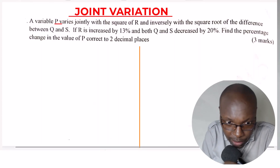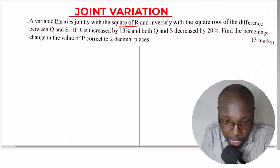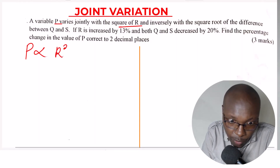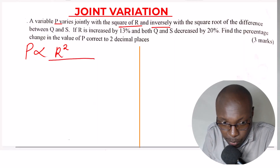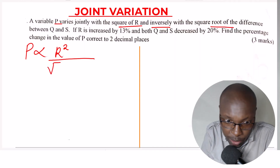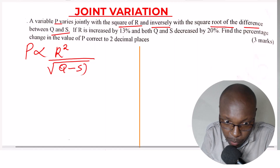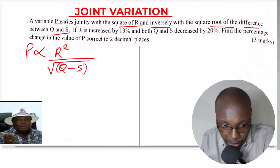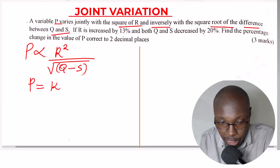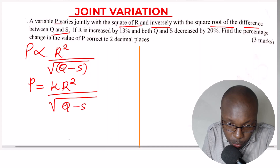We begin by writing the relationship. A variable P varies jointly with the square of R, and inversely with the square root of the difference between Q and S. The difference between Q and S means Q minus S. Then we remove the sign of proportionality and introduce a constant K, giving us P equals K times R squared divided by the square root of Q minus S.